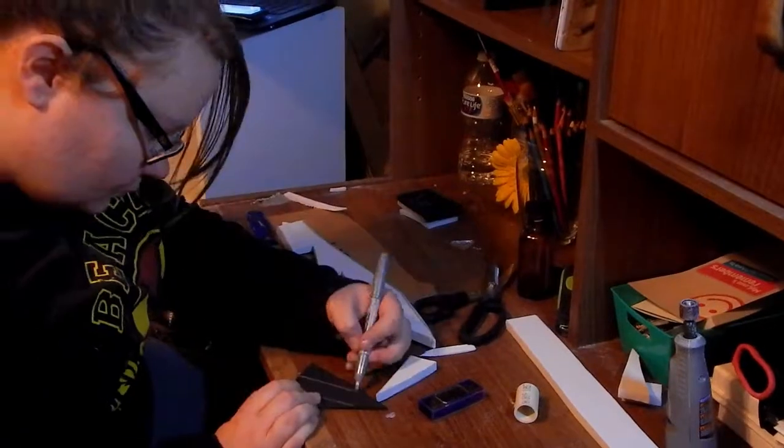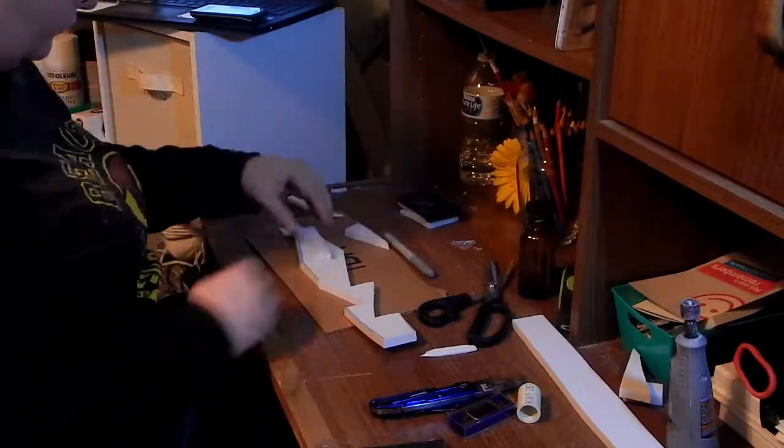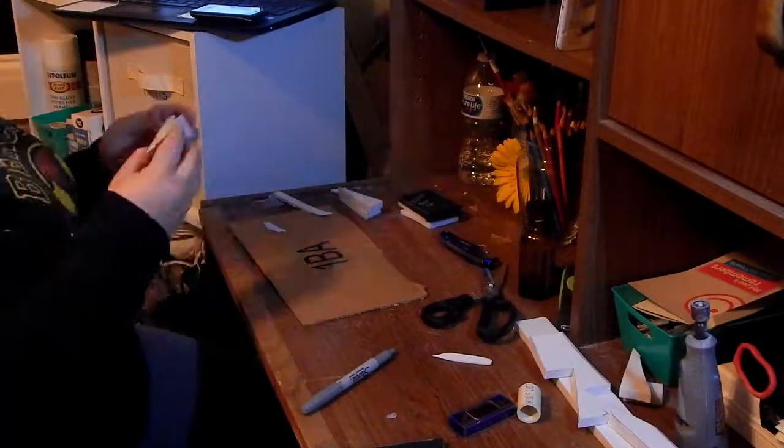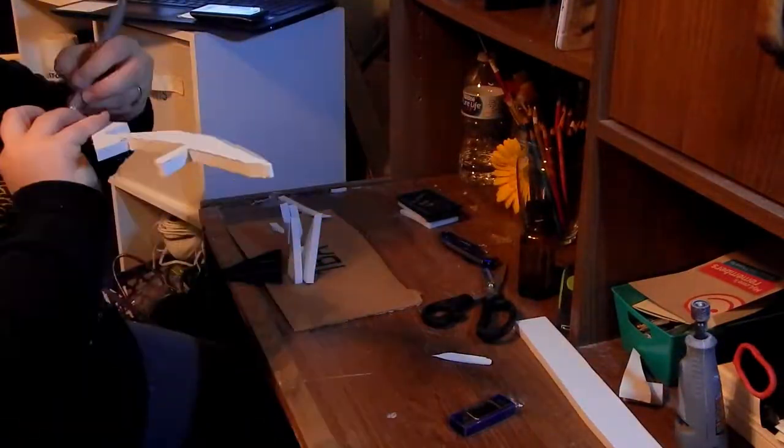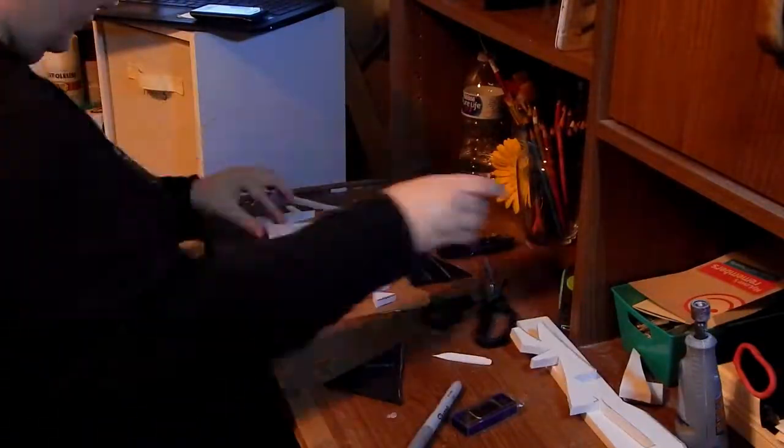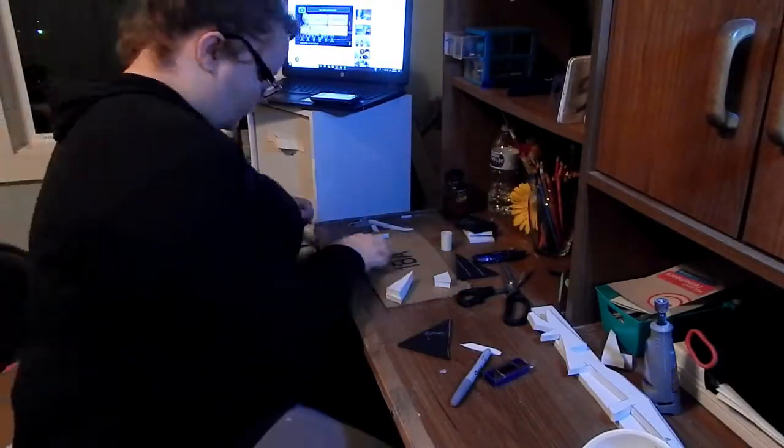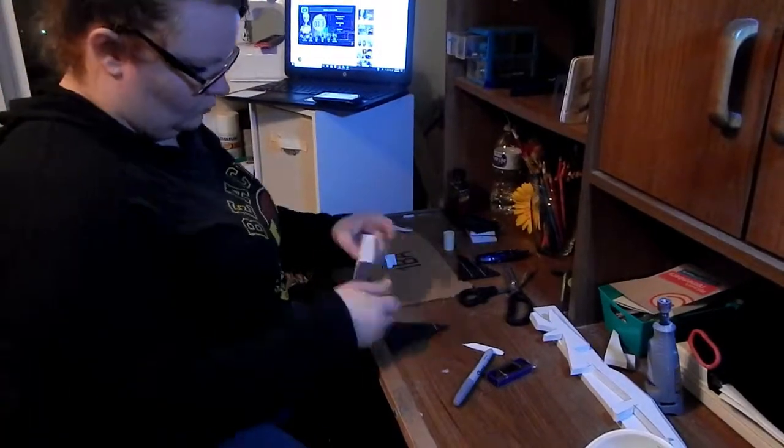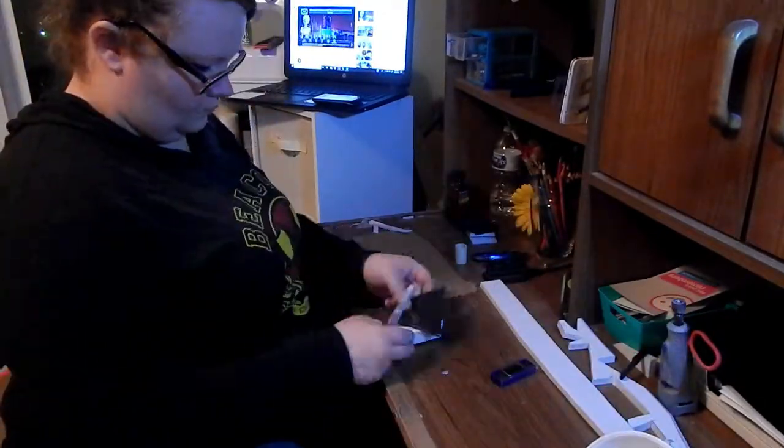Once I learned how the contact cement worked, it actually ended up being a much faster process. Basically, you just spread it out over your two surfaces, you wipe off the excess with a piece of scrap foam, and you just sort of put it all together once it's dried for at least probably five minutes or so.